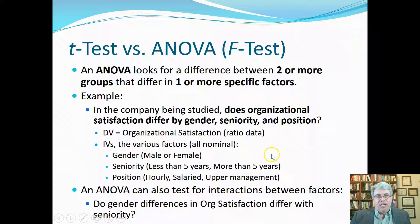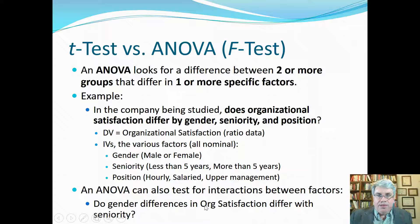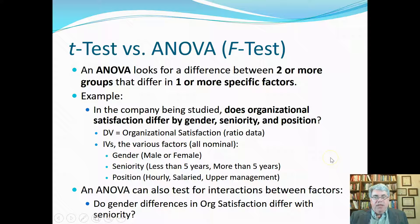ANOVA can also handle not just multiple factors at one time — it also tests for interactions between factors. For example, do gender differences in organizational satisfaction differ with seniority? Are the gender differences in top management different than the gender differences among hourly employees? That's called an interaction, and ANOVA is very good for measuring that. So you can see that with an ANOVA, we can handle many more variables at a time to see what is influencing our dependent variable.